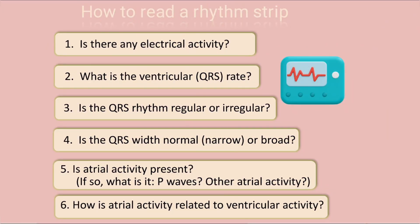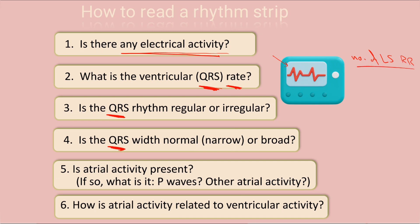If you want to read a rhythm strip on an ECG, you follow specific steps. The first question: is there any electrical activity? The second question: what is the rate of the QRS? To measure the rate, if it is regular, count the number of large squares between two R intervals and divide 300 by that number to get the heart rate.